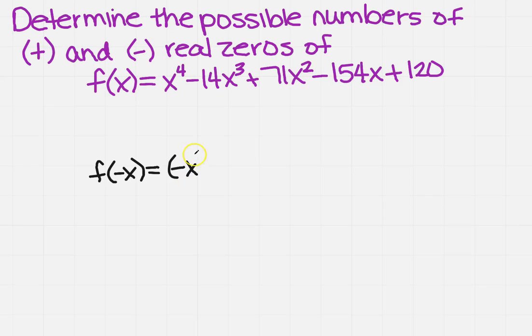I'm going to write that out first so we'll make sure we can all see what's going on. Then I've got negative x to the fourth minus 14 times minus x cubed plus 71 times minus x squared minus 154 times minus x plus 120.